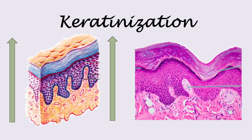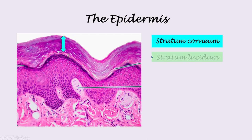Keratinization is a process in which keratinocytes produce large amounts of protein called keratin to protect the inner parts of the skin from being damaged from any sources. The epithelial cells form the outermost layers of the skin, consisting of five layers: stratum corneum, stratum granulosum, spinosum, and basale.